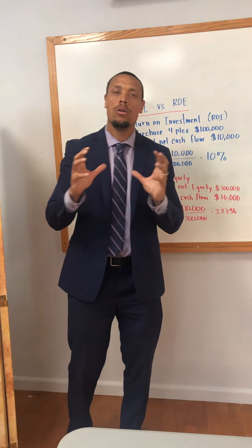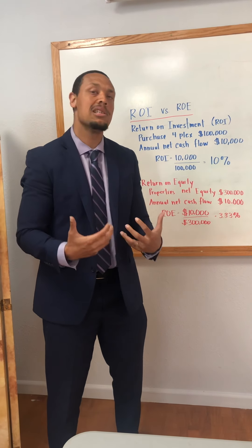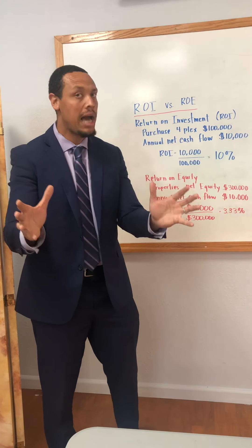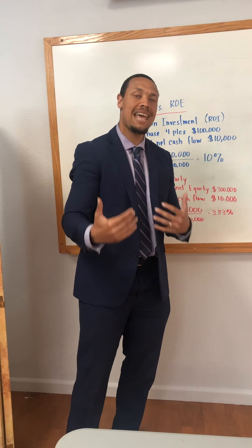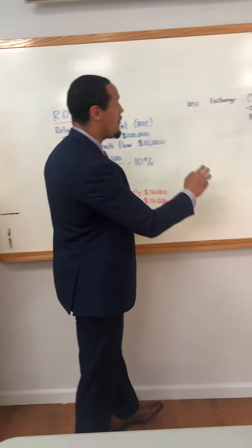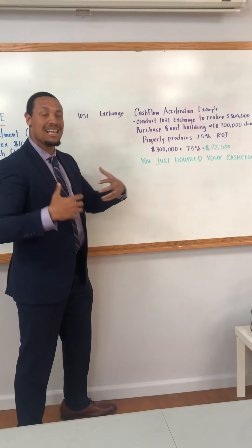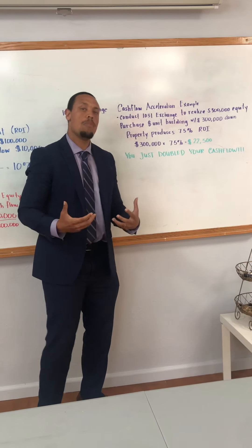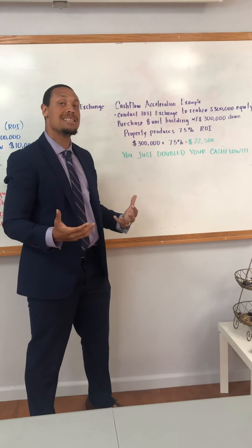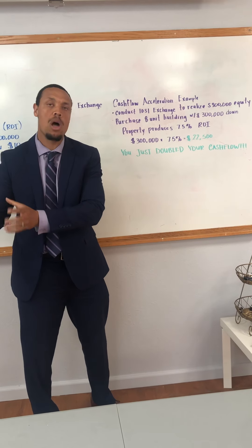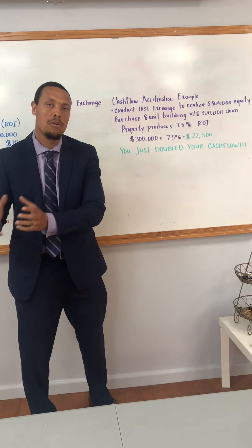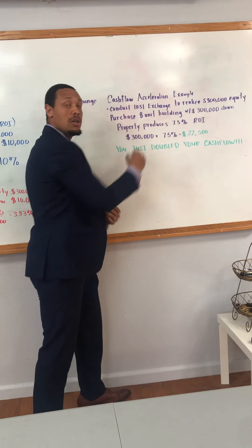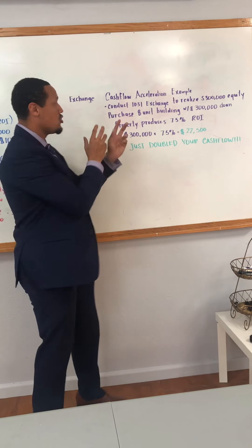So if you're trying to figure out do I hold this property or do I sell this property, this analysis will help you make that decision. Because if I wanted to accelerate my cash flow, I can do that by conducting a 1031 tax-deferred exchange. If I do my 1031 exchange cash flow acceleration, I sell my property, I realize my $300,000 in equity — that cash goes into a qualified intermediary's account for a certain period of time. Then I take that $300,000 and purchase an eight-unit building, exchanging up from a fourplex.